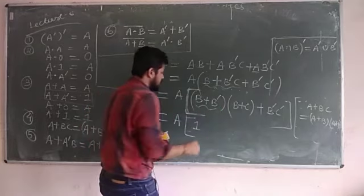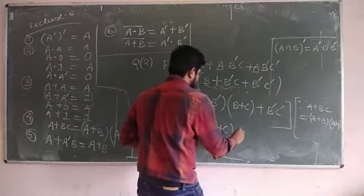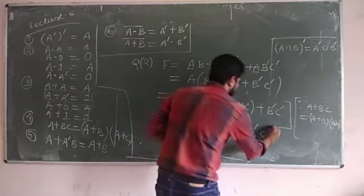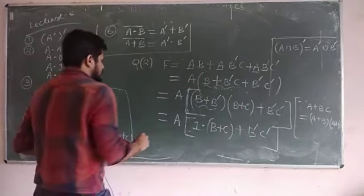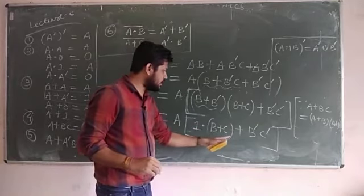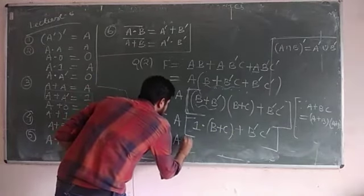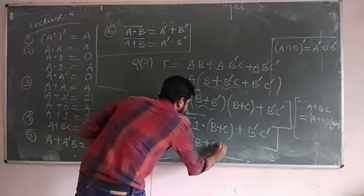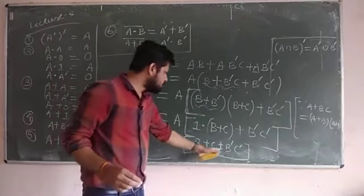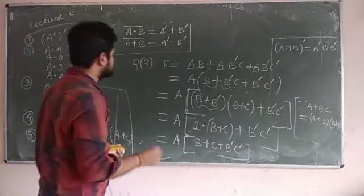So we now have A times [(B OR C) OR (B complement · C complement)]. Apply the distributive law again: B OR C OR (B complement · C complement). This expands to (C OR C complement) AND (C OR B complement).